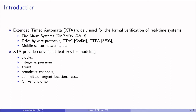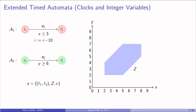Let's see some examples of Extended Time Automata. Here we have a network with automaton A1 and A2. A1 has a real-valued clock X, A2 has Y. There is a clock constraint X ≤ 3, which says when edge E1 can be taken. There is an integer variable I that is being decreased by 10. The semantics are given by a transition system, and the states are of the form of location vectors, zones, and integer variables. A zone is a conjunction of clock constraints — here we have all possible values for the clocks X and Y.